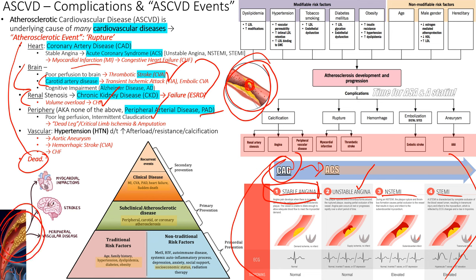Plaque rupture in vessels leads to stroke, heart attack, or peripheral arterial disease. We reviewed modifiable and non-modifiable risk factors. Dyslipidemia means 'whack fats' — abnormal LDL, HDL, triglycerides, or total cholesterol. If you survive an ASCVD event, you'll likely be started on aspirin and a statin.